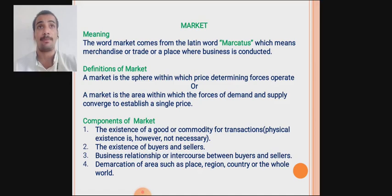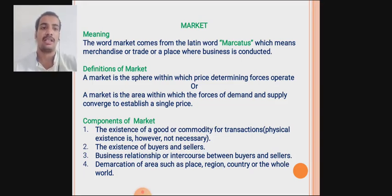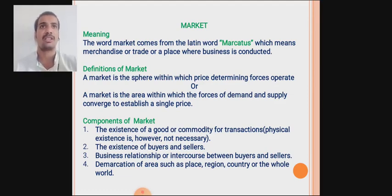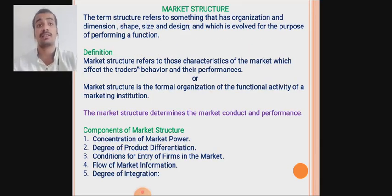Now, what are the different components which affect the market? For the existence of a market we need: first, some commodity or goods for transaction, meaning for physical exchange. Second, the existence of buyers and sellers. Third, a business relationship or intercourse between buyers and sellers — there must be a connection between them. Fourth, demarcation of area, such as a place, region, country, or the whole world.